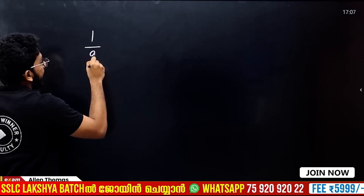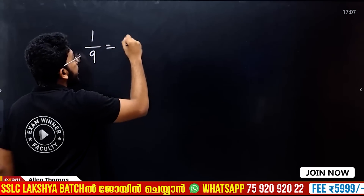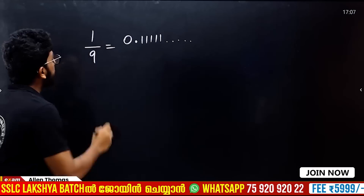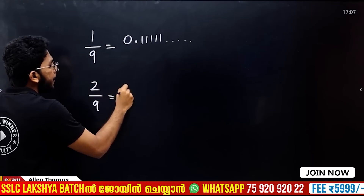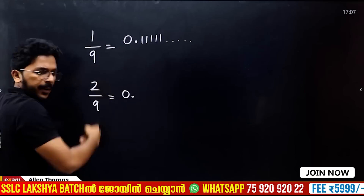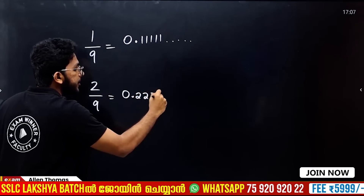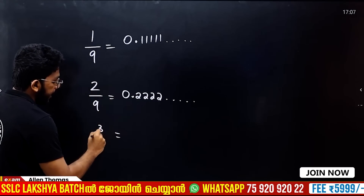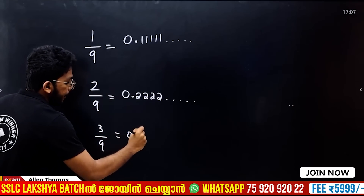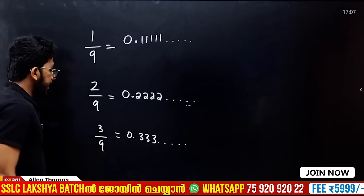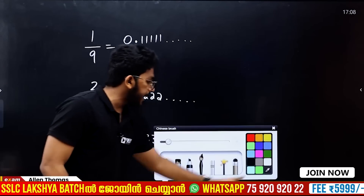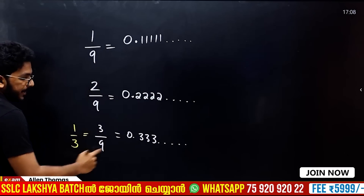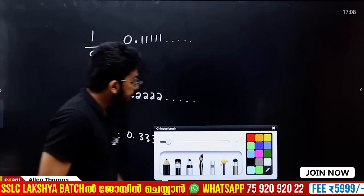1 by 9 equals 0.1111... 2 by 9 equals 0.2222... Point 3 — that is 3 by 9 equals 0.3333... 1 by 3 equals 0.33333... Now we can see this repeating pattern.